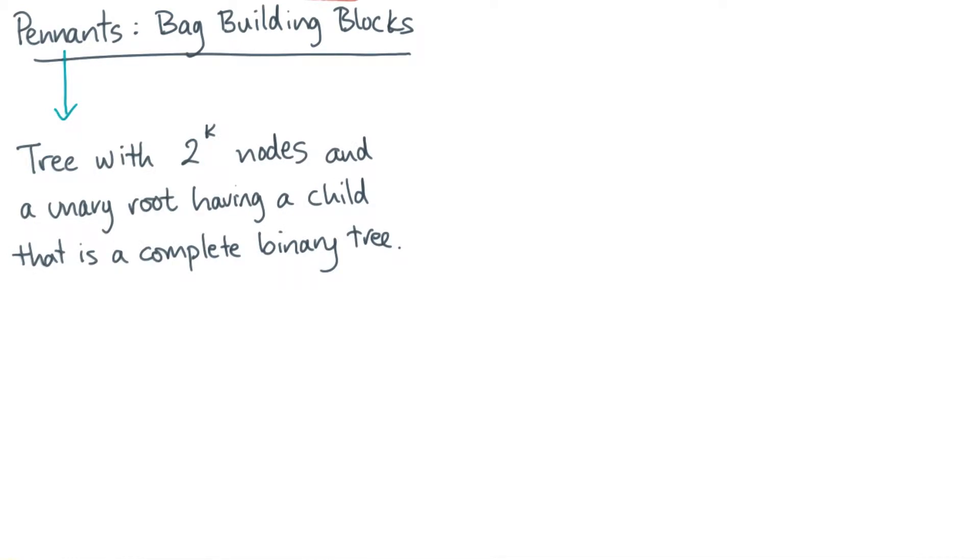A pennant is a tree with 2^k nodes and a unary root. And that root has a child, and the child is the root of a complete binary subtree.